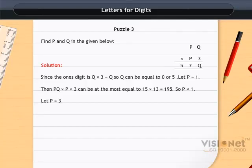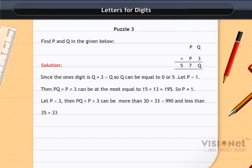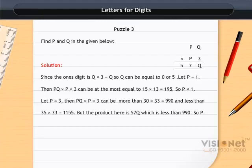Let P=3. Then PQ×P×3 can be more than 30×33=990 and less than 35×33=1155. But the product here is 57Q which is less than 990. So P=2.